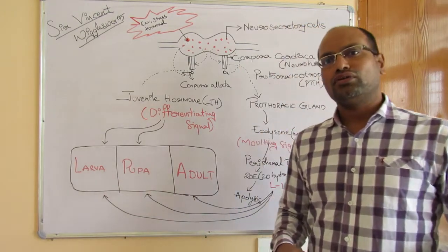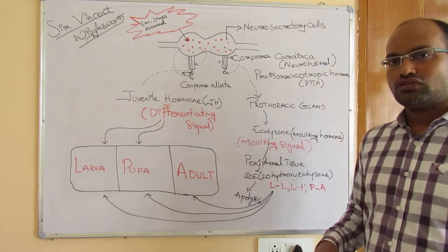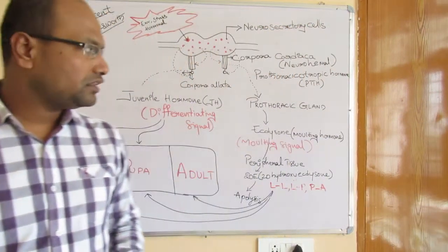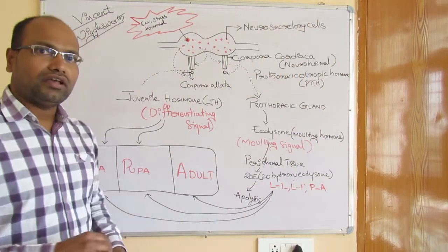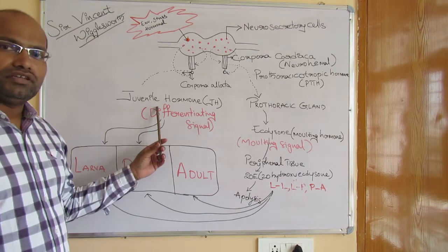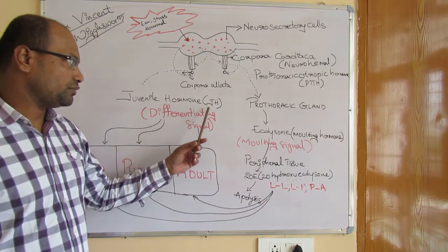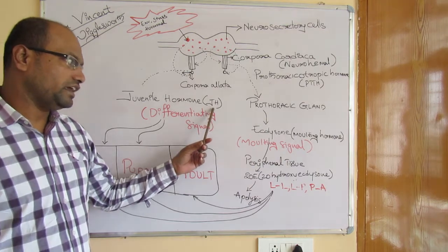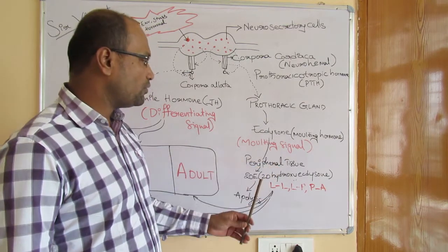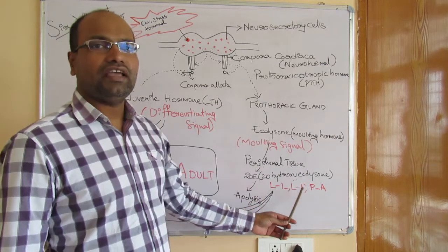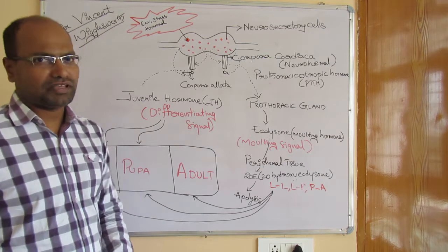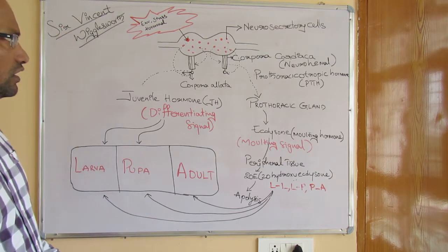We will see how different hormones play an important role during the metamorphosis process. There are two major hormones: one is juvenile hormone, represented as JH, and the other is ecdysone. The active form of ecdysone is 20-hydroxy ecdysone.